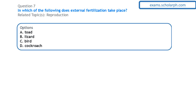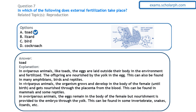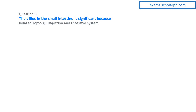Next question on reproduction: external fertilization takes place in the toad. External fertilization is a type of reproduction where the fusion of the sperm cell and egg cell occurs outside the body of the organisms. The female toad lays the egg outside, then the male toad sprays the sperm on it, so fertilization occurs outside the body of the toad.